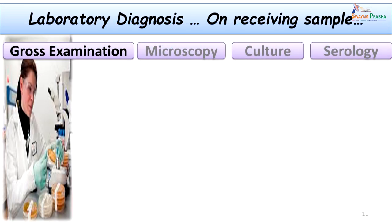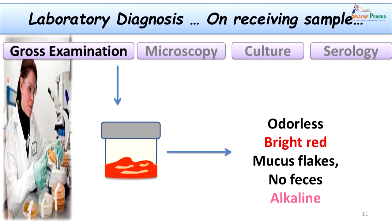On arrival of the sample in the laboratory, we used various modules to establish the diagnosis. The first important step was gross examination, followed by microscopy, culture, and serological testing for confirming the etiology. The gross examination was performed on receipt. The stool appeared bright red in color and mixed with mucus flakes, with almost no fecal matter — it was mostly blood and mucus, odourless, and with an alkaline pH.